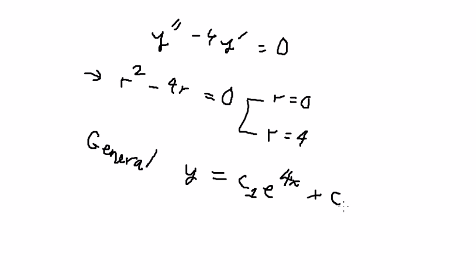Plus c₂ with e to the power of zero x. In this situation, you get one, so we don't need to write it. This is 4x.